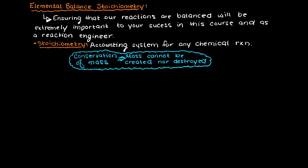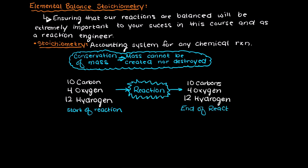So for example, if we had 10 carbons, 4 oxygens, and 12 hydrogens into our reaction we are going to get the exact same 10 carbons, 4 oxygens, and 12 hydrogens even though they may be in a different chemical configuration.